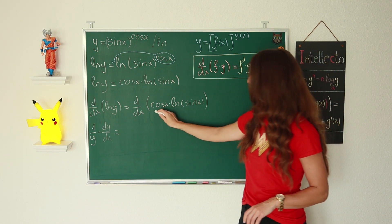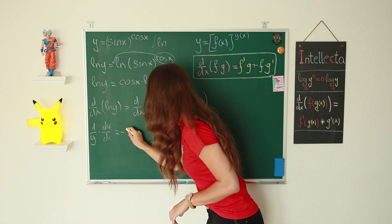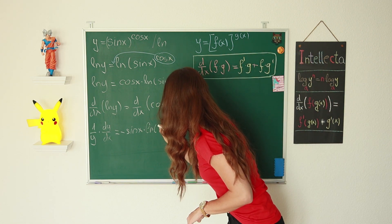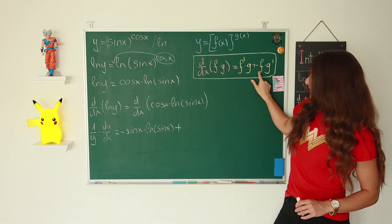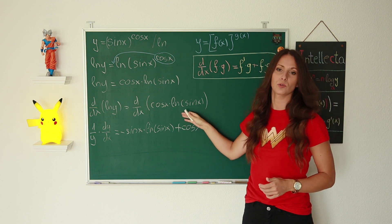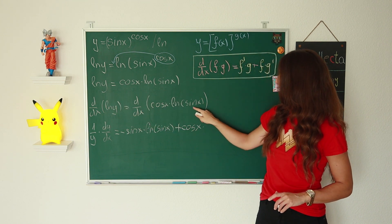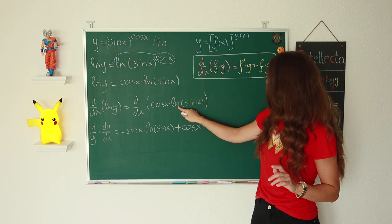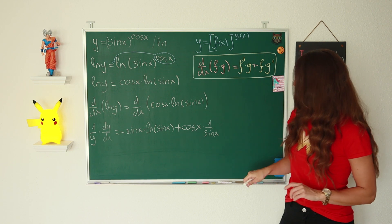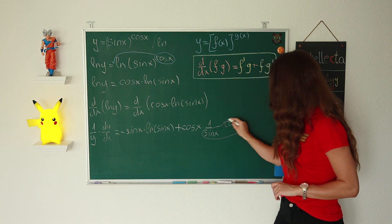Applying the product rule to cosine(x) times ln(sin x): the first function is cosine(x), and its derivative is minus sin(x), times ln(sin x) — the second function stays as is — plus cosine(x) times the derivative of ln(sin x). That derivative is a composite function again, giving 1 over sin(x) times the derivative of sin(x), which is cosine(x). So cosine(x) over sin(x) is cotangent of x.